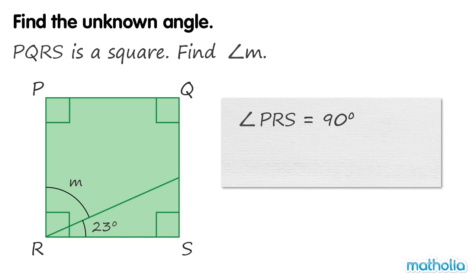So angle M is equal to 90 degrees minus 23 degrees. 90 minus 23 equals 67. So angle M is equal to 67 degrees.